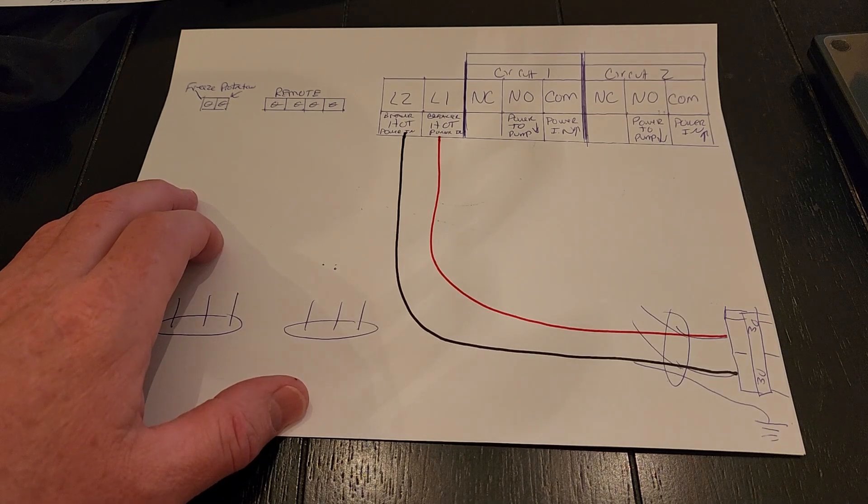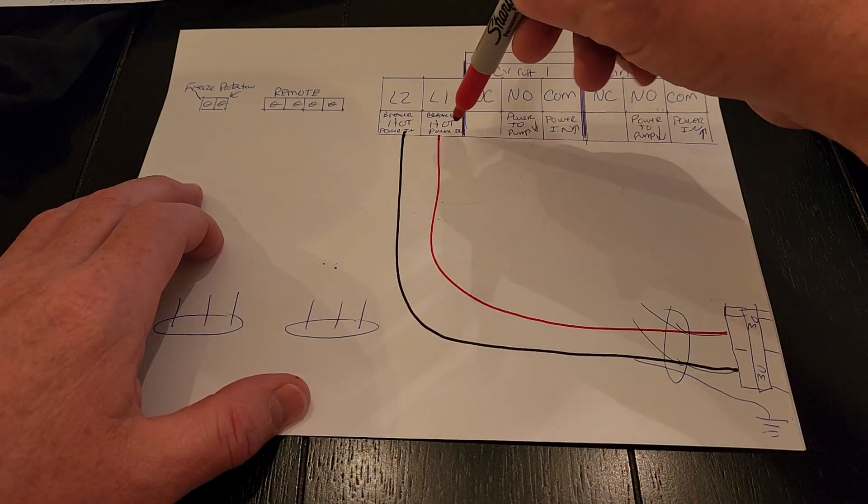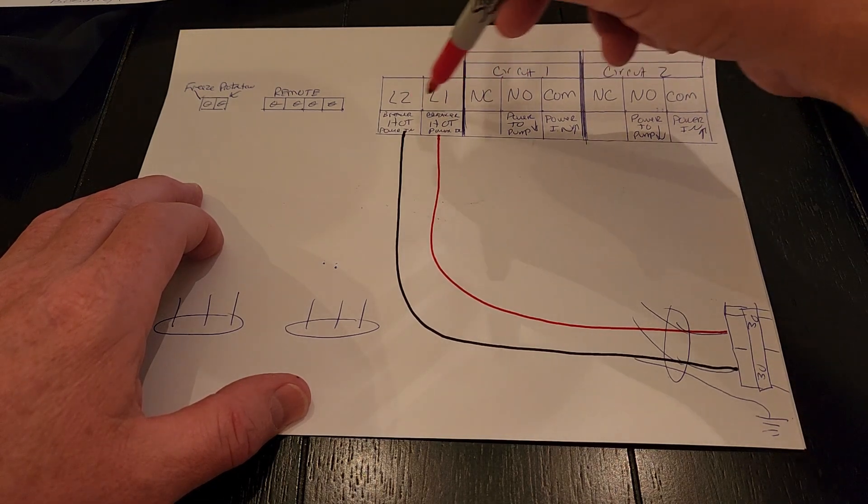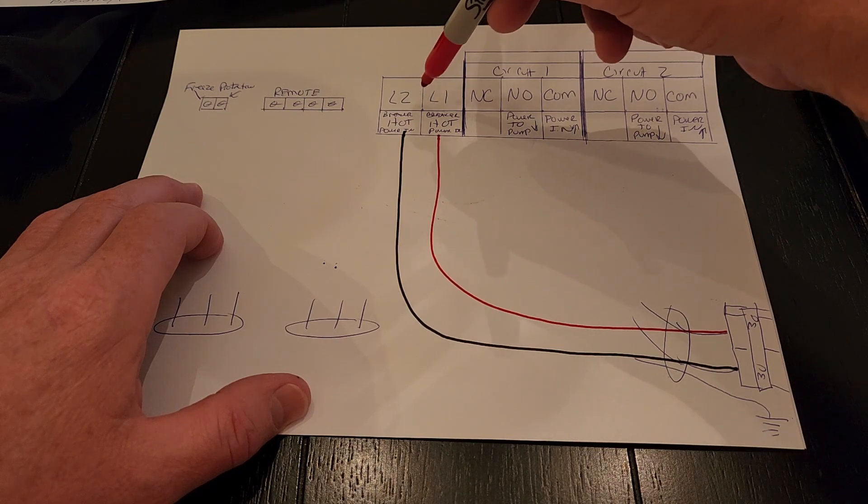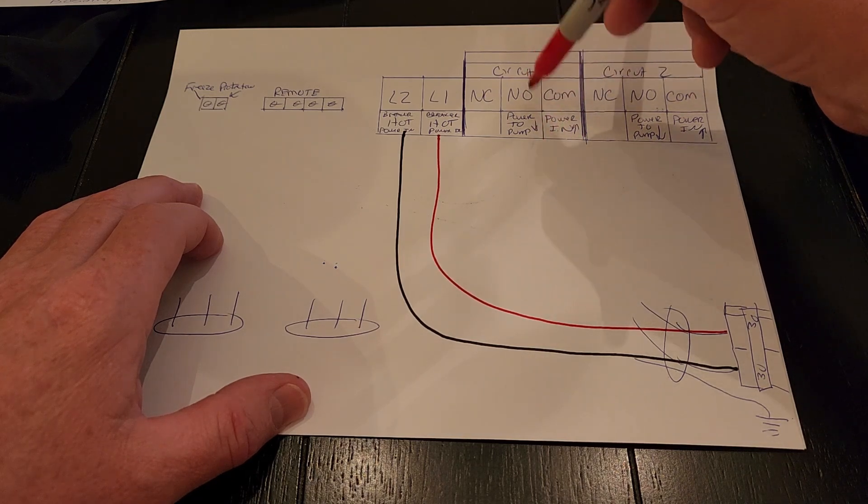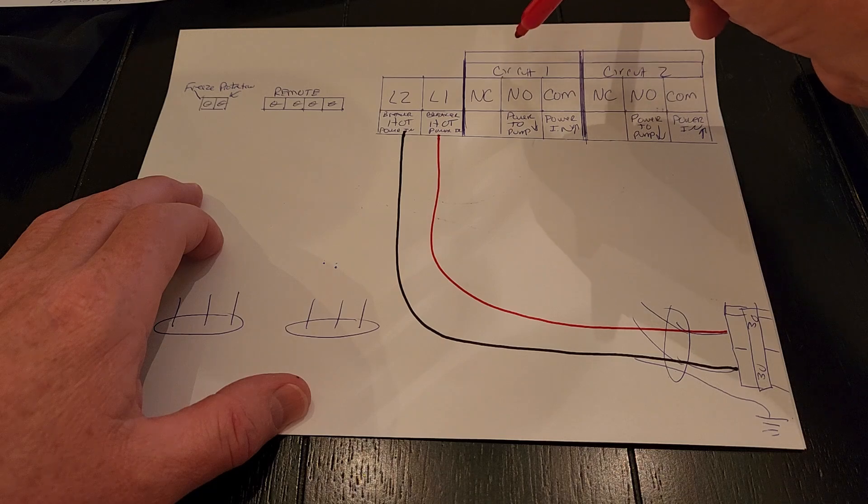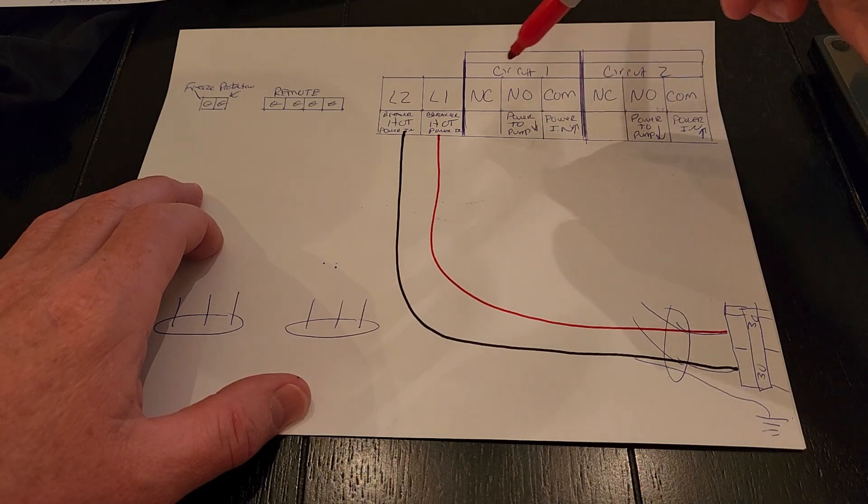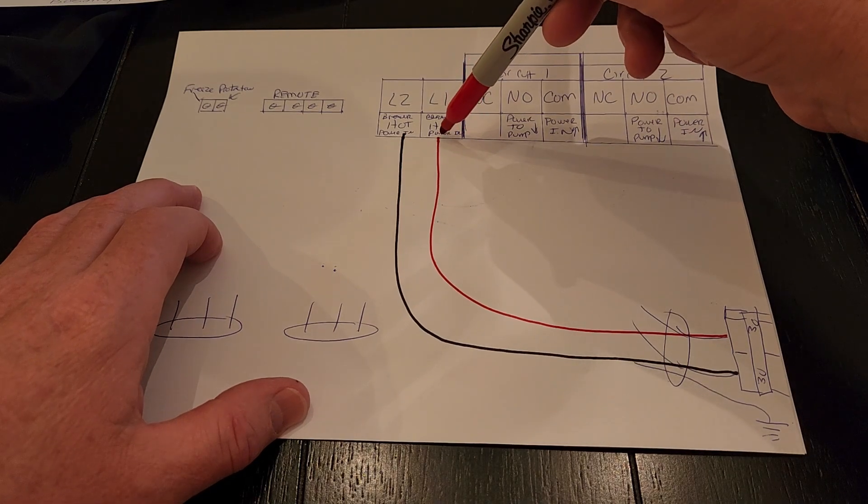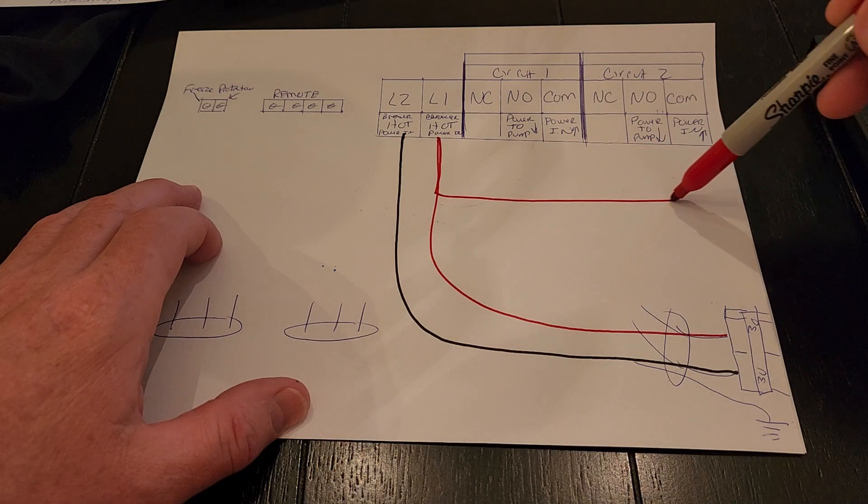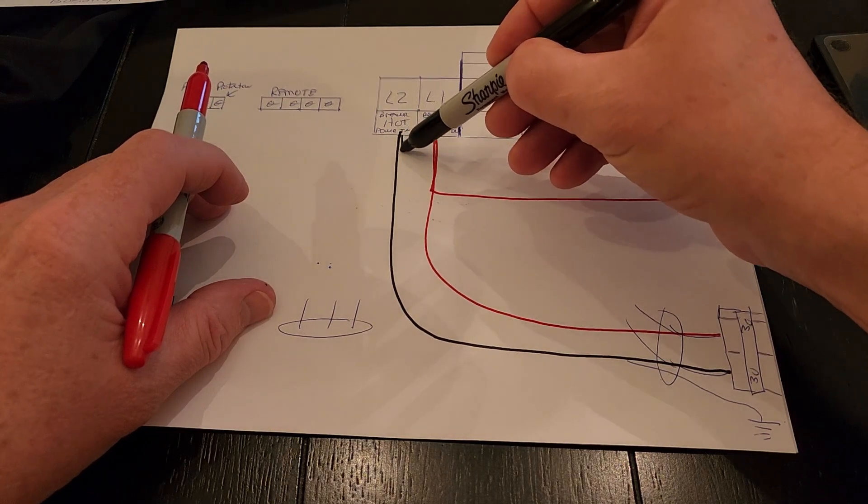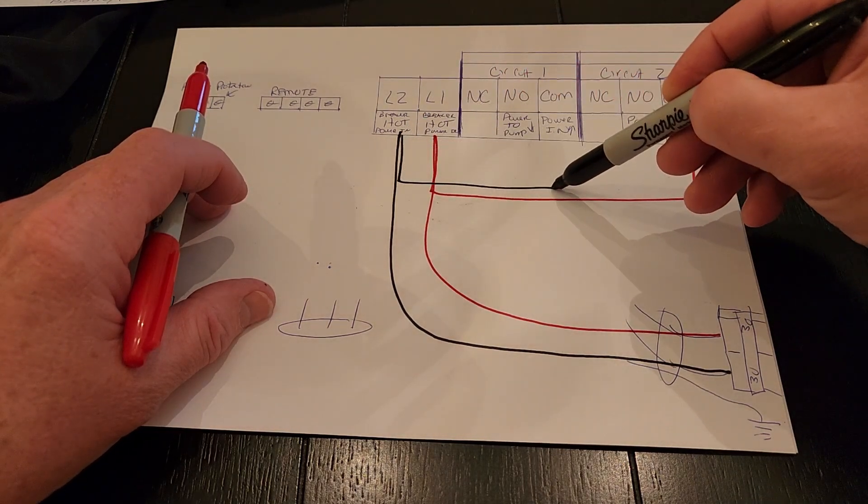For ease of install, we ran the L1 to COM1. This is power in for your pump power. This powers the box. L1 and L2 powers the box. Circuit 1, circuit 2, COM is what power goes in and then comes out the normally open when the power goes in to close the circuit to send power to the pump. So then we jumpered L1 over to COM-IN and then we jumpered L2 to COM1.